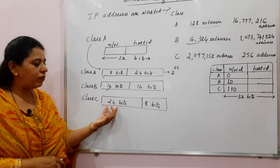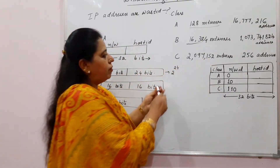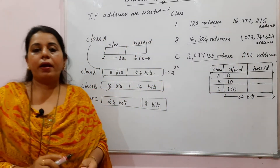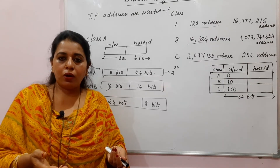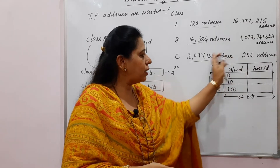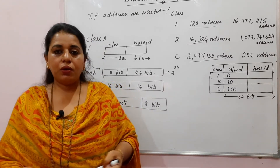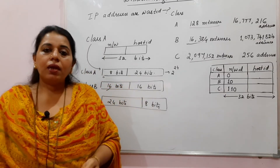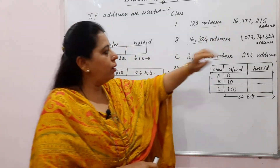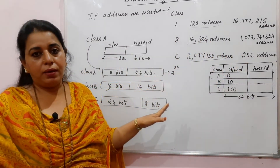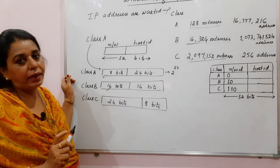Next comes class C. In class C, 24 bits are used for the network part, and '110' indicates the class type. So 2 to the power of 21 networks are possible in class C, but in each network only 256 addresses are available. This type of division is not at all useful for any organization. Even a very small organization that accepts a class C block may later need more IP addresses as the organization grows and more employees join. So 256 addresses in the network is not sufficient — this imbalance is the main reason for moving to classless addressing in IPv4.